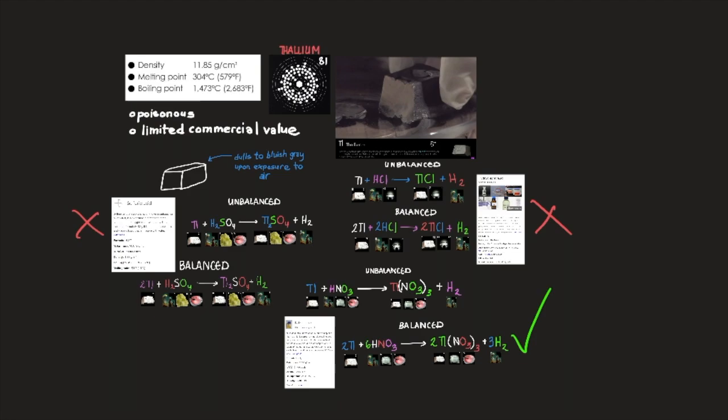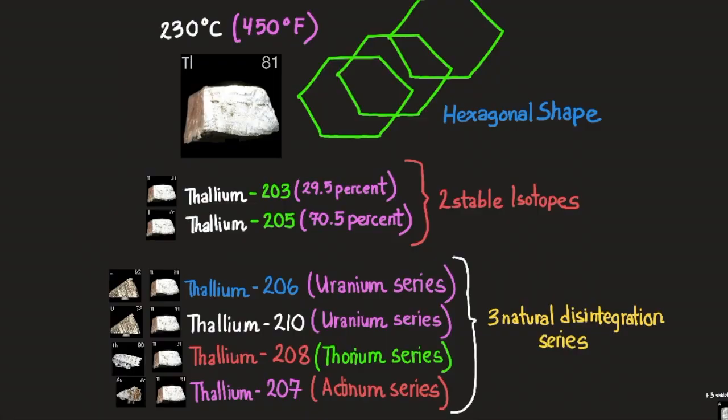So two crystalline forms of the element are known, close-packed hexagonal below 230 degrees Celsius or 450 degrees Fahrenheit and body-centered cubic above. Natural thallium, the heaviest of the boron group elements, consists almost entirely of a mixture of two stable isotopes, thallium-203, which makes up 29.5%, and thallium-205, which makes up 70.5% of the total amount of thallium isotopes. Traces of several short-lived isotopes occur as decay products in the three natural radioactive disintegration series.